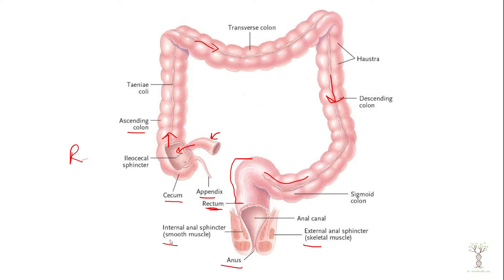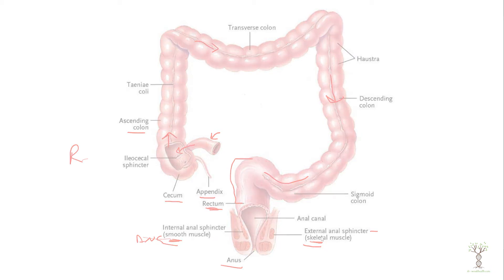There are external and internal sphincter muscles here. The internal sphincter is composed of smooth muscle and is regulated by the autonomic nervous system, but the external sphincter muscles are skeletal muscle, which means that we can voluntarily control those contractions so we can go to the bathroom at an appropriate time.